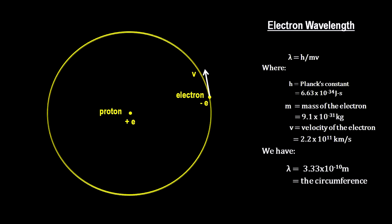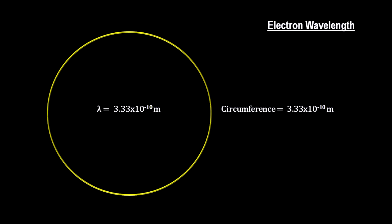Earlier, we calculated the velocity of the electron, so like we did with electron microscopes in the previous segment, we can now calculate its wavelength. When we do, we get exactly the length of the electron orbit's circumference, as enumerated by Bohr.